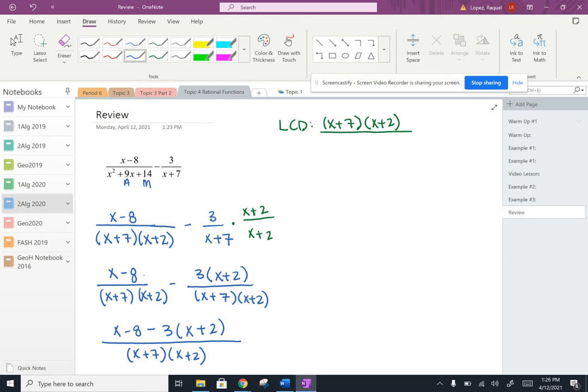Now to start simplifying, I want to distribute that negative 3. So I'm just going to turn that into a negative, and I'm going to distribute that into the parentheses right here. So I end up with x minus 8 minus 3x minus 6, all over x plus 7, x plus 2.